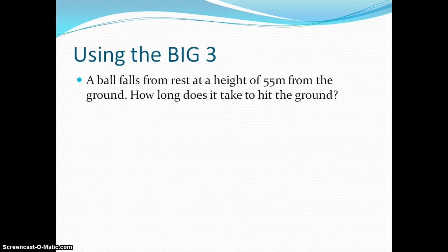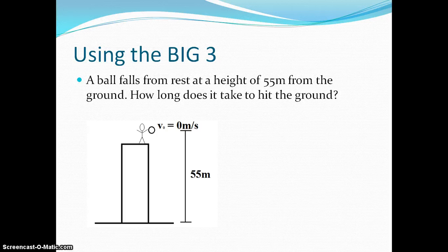So let's run through an example problem. We have a ball that's dropped from rest at a height of 55 meters off of a building towards the ground. The question is how long does it take to hit the ground? So let's remember, our givens are initial velocity is 0 meters per second, our initial y position is 55 meters, our final y position is 0 meters.